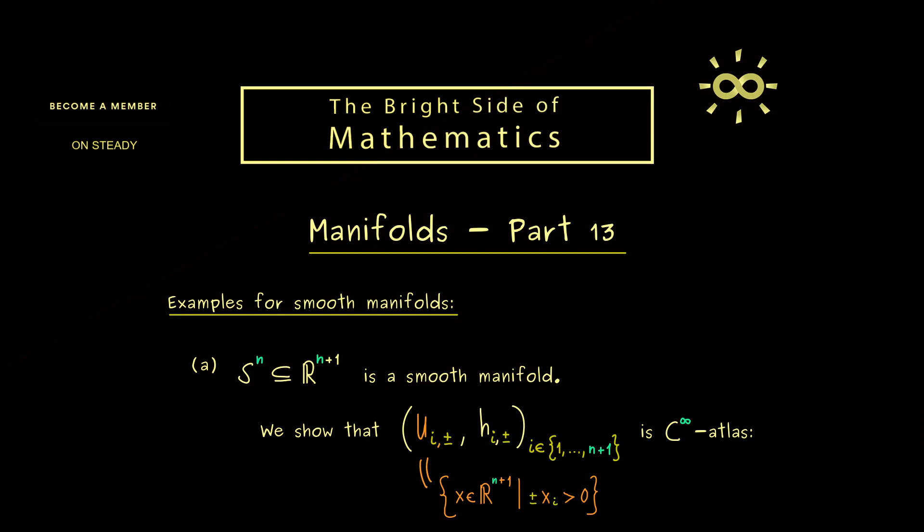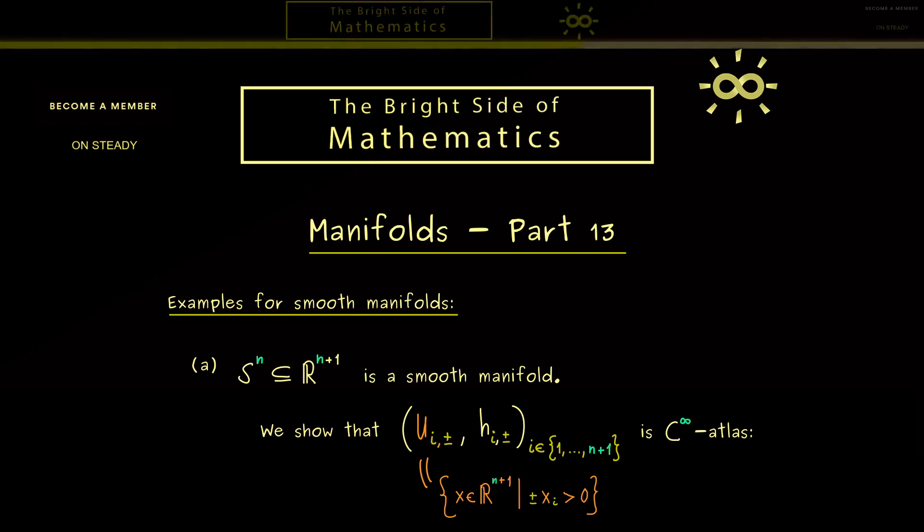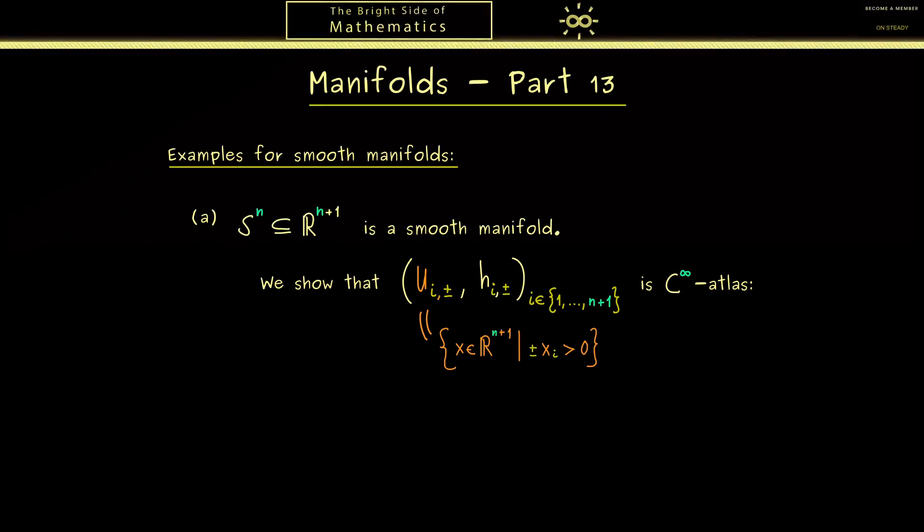It's best to visualize this with the two-dimensional sphere in R^3. For example, the southern hemisphere here is given by U_{3,-}, and then the corresponding map h will just get rid of the third coordinate here.